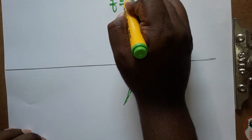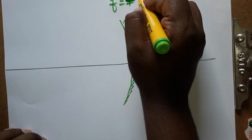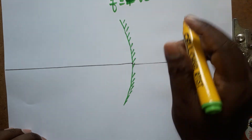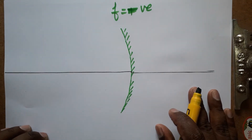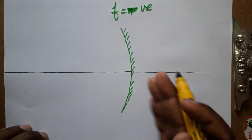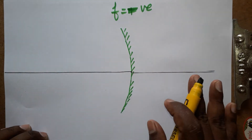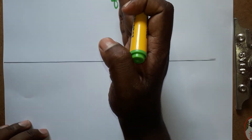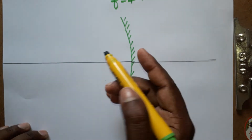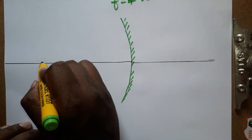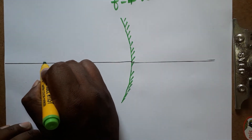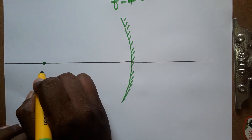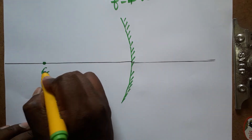For a concave mirror, the focal length is negative. The concave mirror is usually referred to as having a negative focal length. It is a spherical surface.